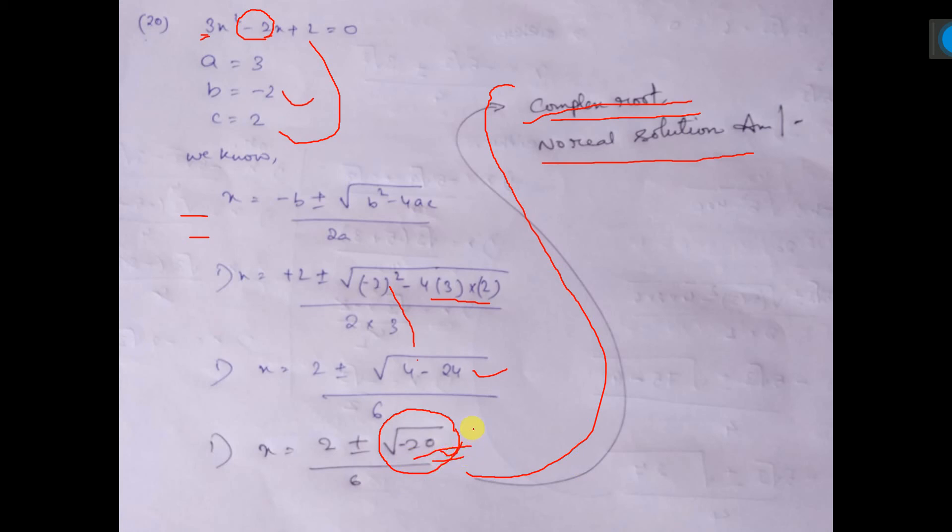So, up to this much the sum is. We have to write this part. This is very important. Complex root or no real solution.